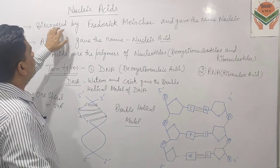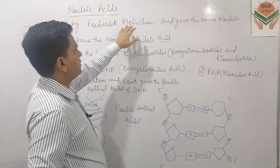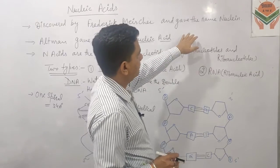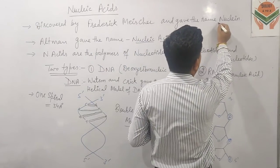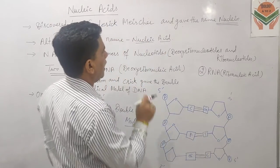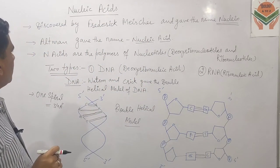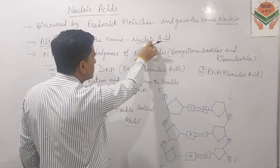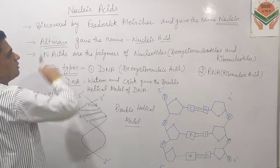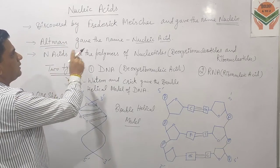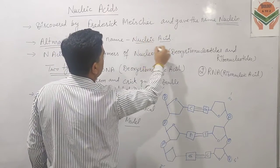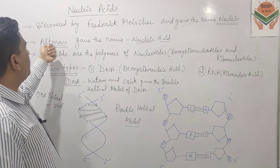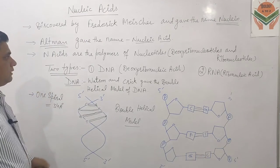Discovery की बात करें तो Nucleic Acids were discovered by Frederick Miescher in the pus cells, and he gave the name 'Nuclein'. Frederick Miescher ने pus cells में से इनको discover किया। Ultimately, Altman ने नाम दिया Nucleic Acid, because he saw them inside the nucleus of the cell and observed that these substances are acidic in nature. So discovery Frederick Miescher ने की और नाम Nucleic Acid Altman ने दिया।